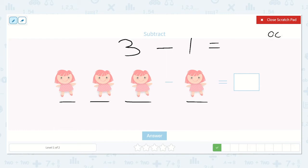If we have 1, 2, 3, and we take away 1 of those, how many do we have left? Yes, 2.